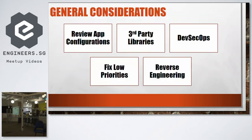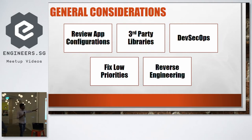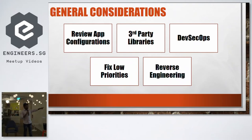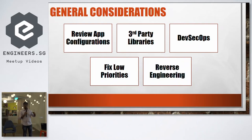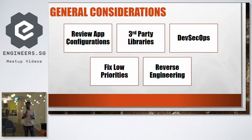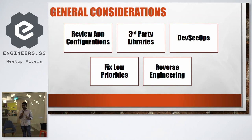OWASP Top 10 is complete. Key takeaways: first, review all app configurations and security controls. Second, choose the right third-party libraries — avoid malicious ones. Third, adopt DevSecOps starting today — don't push security to the end of the project cycle. Start from day one using a shift-left approach in a continuous integration manner. Fix all low-priority issues too — they are not negligible. Implement proper obfuscation to prevent reverse engineering.